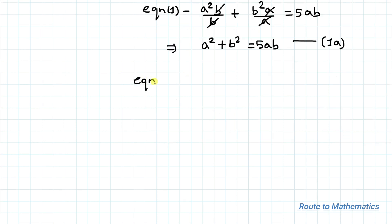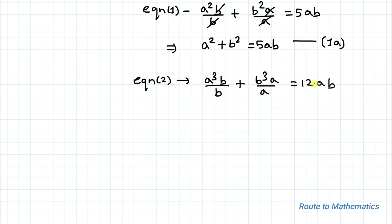Similarly, multiplying ab in equation 2, we get a³b/b + b³a/a = 12ab. Here b cancels out and a cancels out, so we have a³ + b³ = 12ab. Let us take it as equation 2a.